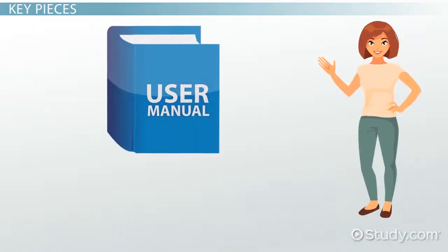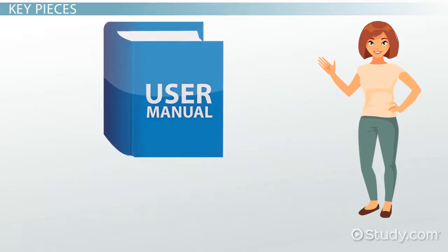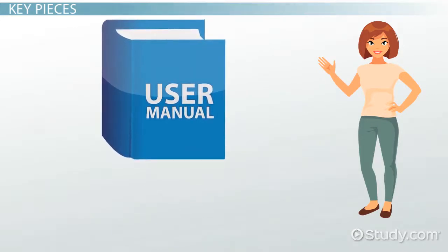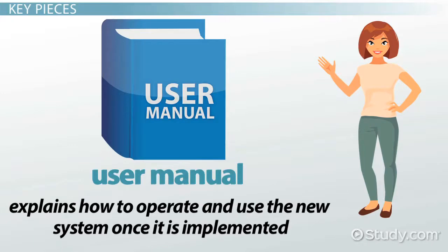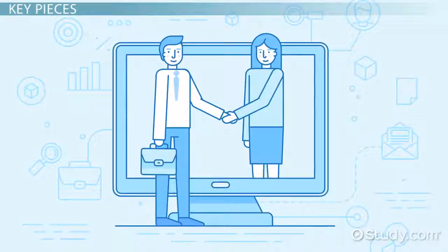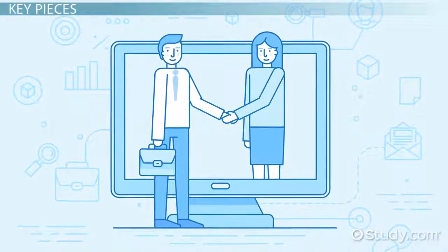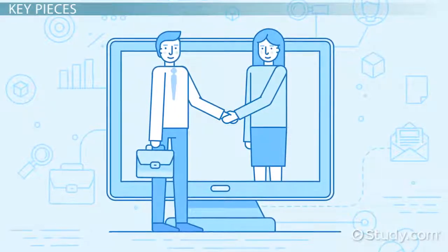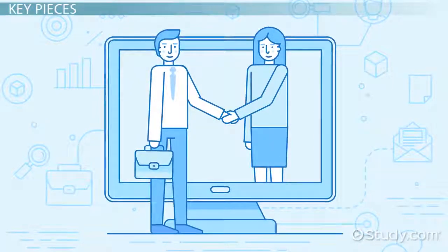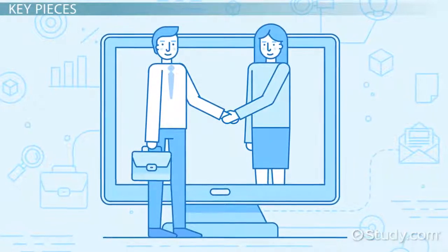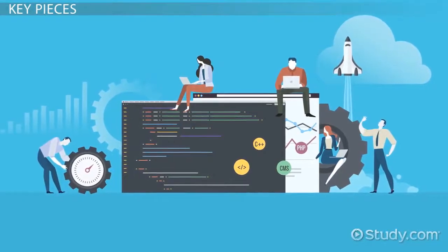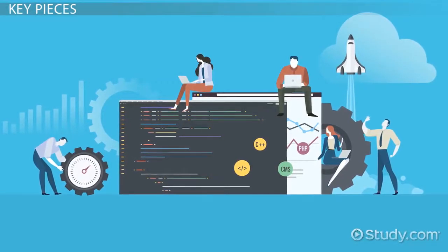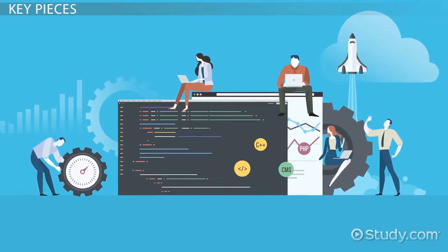Marge's research also taught her about a second type of manual known as the User Manual, which explains how to operate and use the new system once it is implemented. And finally, Marge learned that before the system can move on to the fourth phase, the customer again needs to sign off. This allows assurance that the design team met the requirements and is on track to fulfilling the customer's needs.